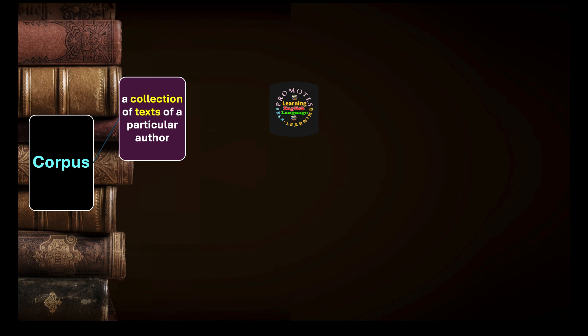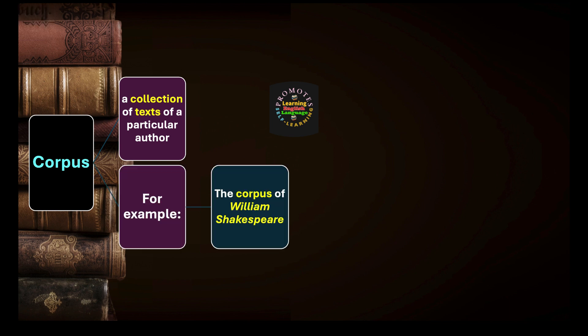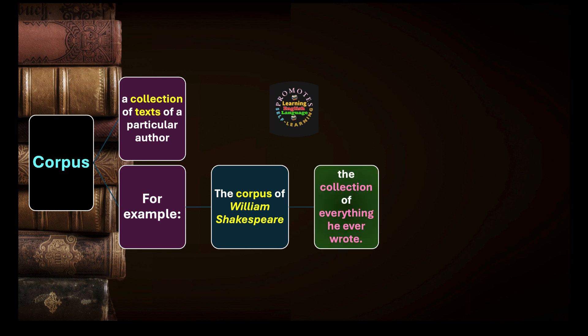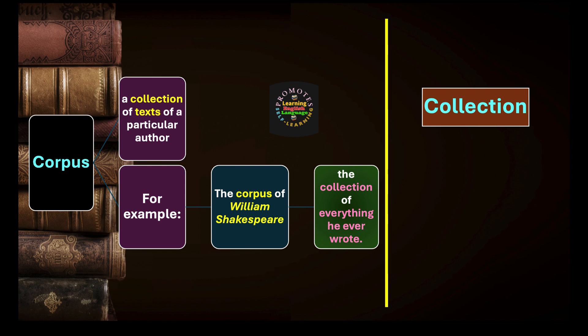Corpus is a collection of texts of a particular author. As mentioned, corpus refers to body, body refers to group or collection. In that way it is a group of texts, a collection of texts of a particular author, a particular writer, a particular creative person, or a particular leader's speeches. For example, we can say the corpus of William Shakespeare, William Wordsworth, or Charles Dickens — meaning the collection of everything he ever wrote.